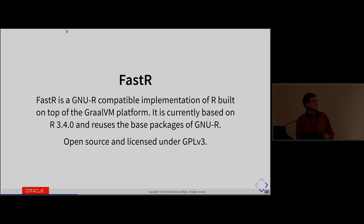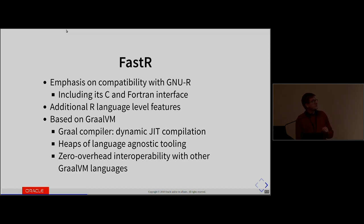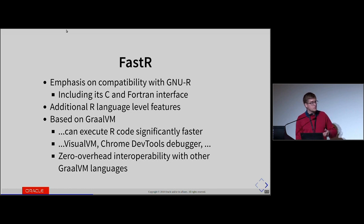FastR places emphasis on compatibility with GnuR — that's an important thing for us. We emulate the native interface of GnuR, so package extensions using C or Fortran run on FastR. We provide some additional R language-level features and, because we are based on Graal, we have the advantages listed here. With Graal, the R code is dynamically JIT-compiled, which means FastR usually executes your code significantly faster than GnuR, depending on the type of code.